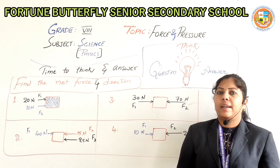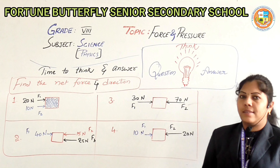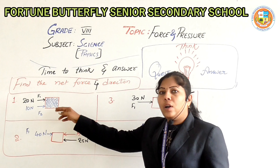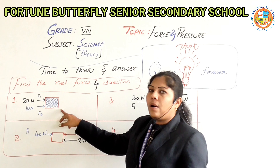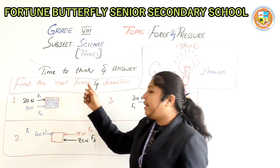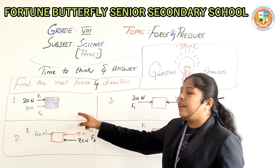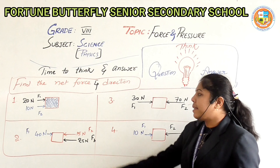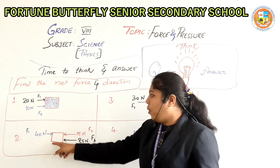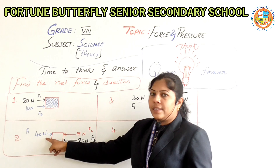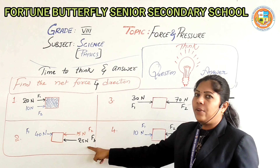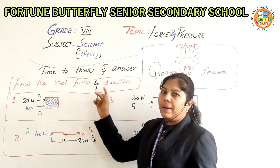Now it is time to think and answer. Note the questions and find the answers. In the first figure, forces F1 of 20 newtons and F2 of 10 newtons are acting on an object. Find the net force and the direction. In the second figure, three forces F1 of 40 newtons, F2 of 15 newtons, and F3 of 25 newtons are acting on an object. Find the net force and the direction.